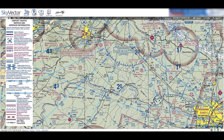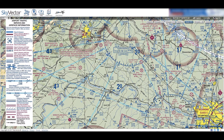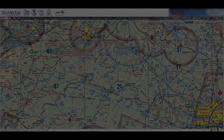The last special use airspace we will cover is the Victor Airway. These are blue lines that crisscross the map and are identified by a V followed by the ID number. For the most part, UAS operators don't need to worry about these since they are highways in the sky and most air traffic on them will be well above where we fly.